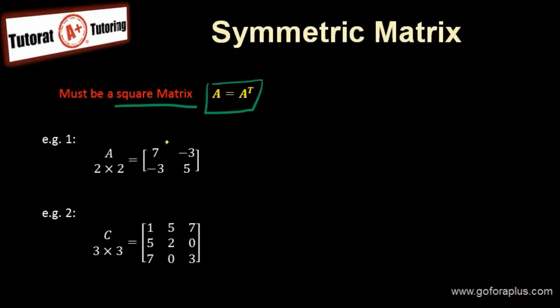Look at example 1. We have a matrix A, 2 by 2: [7, -3; -3, 5]. What is the transpose of this? The transpose of this matrix is the first row equals the first column, so 7, -3. Second row is the second column: -3, 5. If we look at A transpose and A, they have the same matrix. That means A equals A transpose, so we can call matrix A a symmetric matrix.